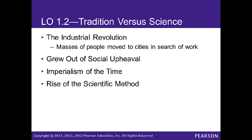Regarding tradition versus science: the Industrial Revolution caused masses of people to move to cities in search of work. Before the Industrial Revolution, the United States was largely an agricultural society. The rise of factories drew people away from farming into urban labor, which caused significant changes in the structure of society — something we'll revisit when discussing Karl Marx.